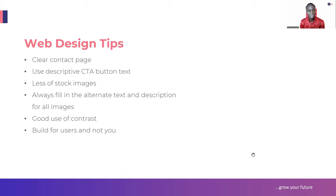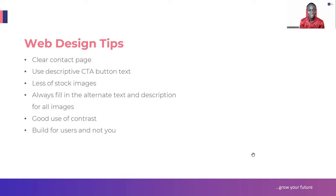Always fill in the alternate text and description for all images - this is to help your search engine optimization. There is a way we upload images to websites and fill in what we call the alternate text and the description. Then, good use of contrast - contrast is all about differentiation. For instance, if you look at this slide, the background is white and the text placed on top is not white. If you put white text on a white background, it will not show. You must create a level of difference to help your content be readable and for people to navigate well on your website.